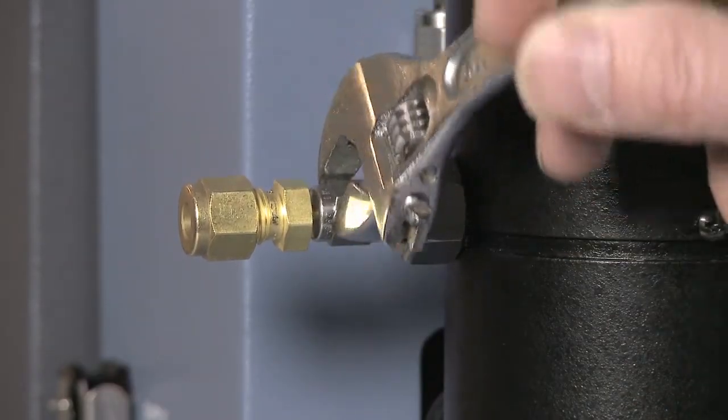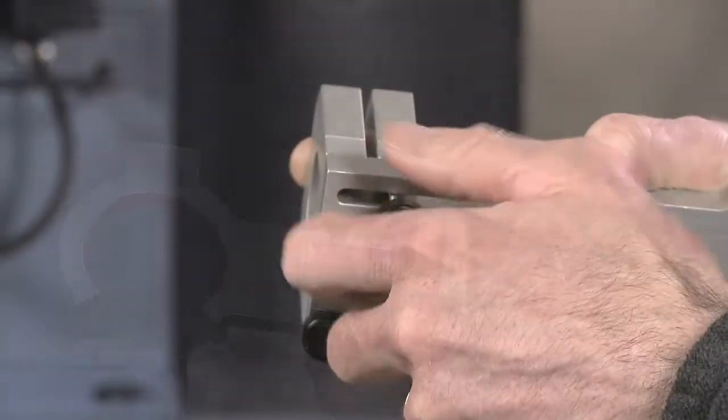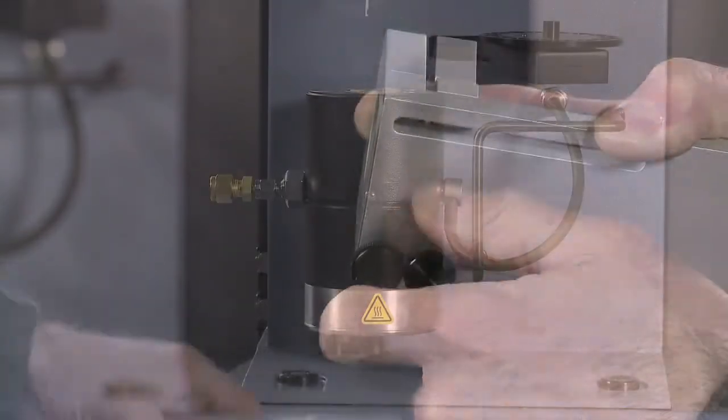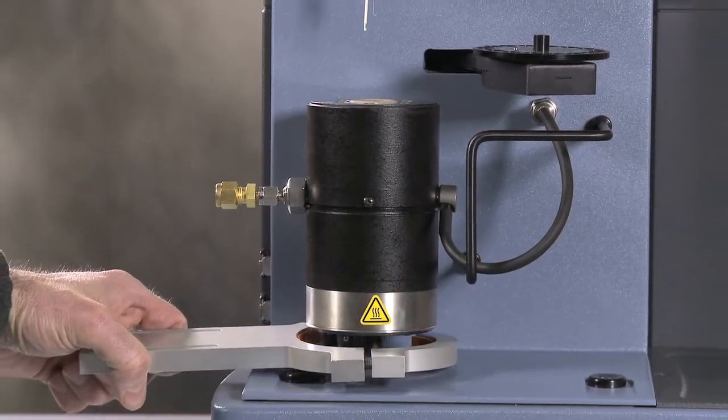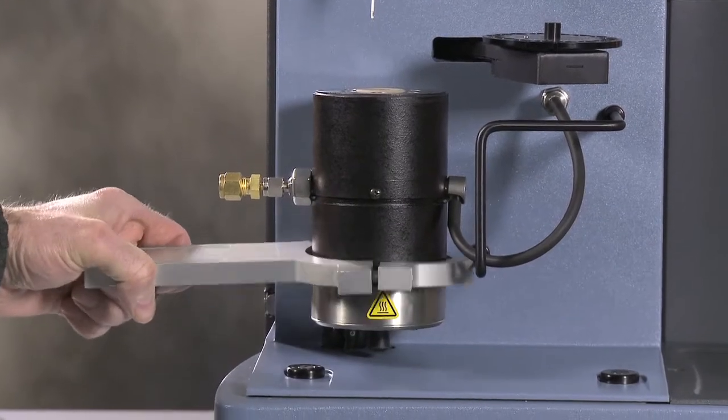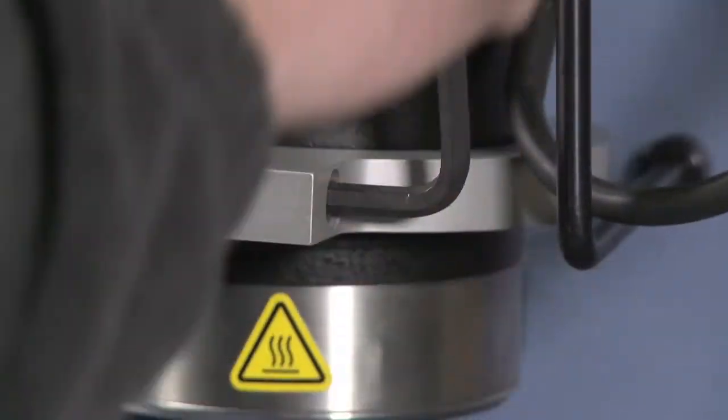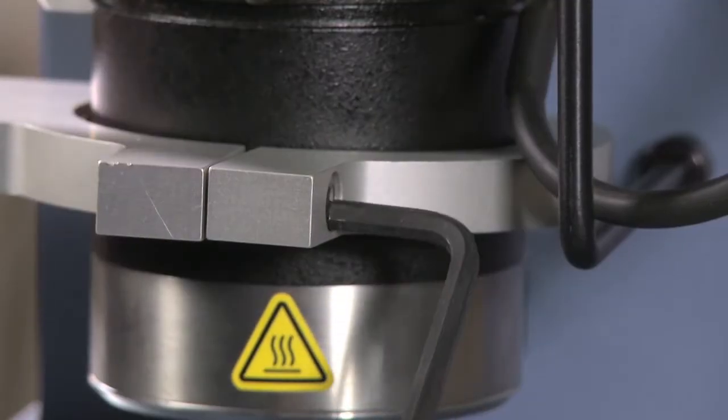You are now ready to install the clamp for the heated transfer line. Start by removing the screws and the brackets from the clamp assembly. Slide the clamp assembly around the bottom of the EGA furnace and raise it up to the point that the clamp edge is just below the purge gas line. Using the hex key provided, tighten the clamp securely.